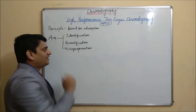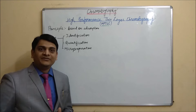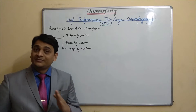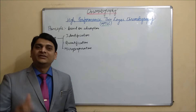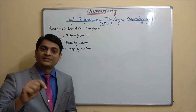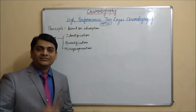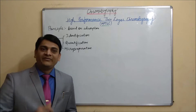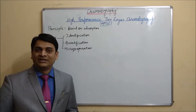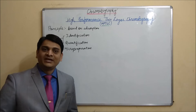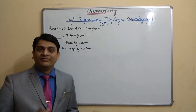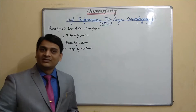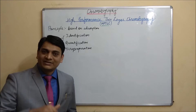Now coming to quantification. In quantification, we can put different concentration bands of the standard, then put a sample band. By using different concentration standard bands, we will plot our calibration curve, and by using that calibration curve equation, we can determine the concentration of that particular compound or analyte in our sample.